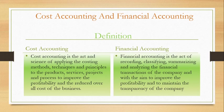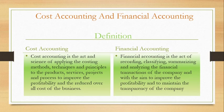If we look at the definition-wise difference: cost accounting is the art and science of applying costing methods, techniques, and principles. Its basic objective is cost ascertainment, to improve profitability and reduce overall cost. Financial accounting is the act of recording, classifying, summarizing, and analyzing the financial transactions of the company. Its basic aim is to maintain transparency in the financial position of the company.